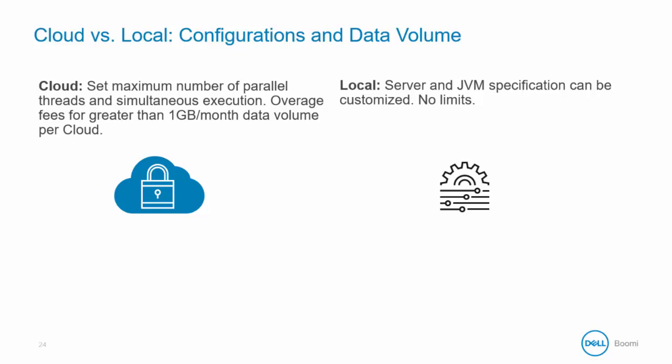The way you can configure your data volume is different. In the cloud, there is a set maximum number of parallel threads and simultaneous executions. In a local deployment, the server and JVM specifications can be customized, so there is no limit on the number of parallel threads, executions, or data volume that you can process.